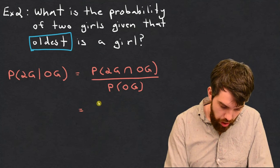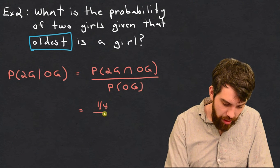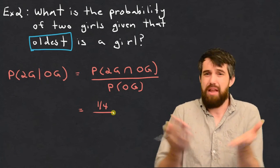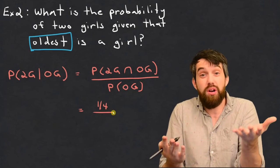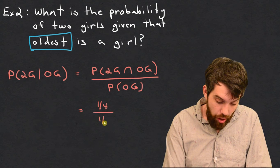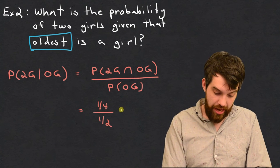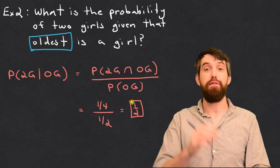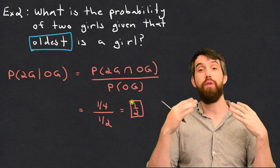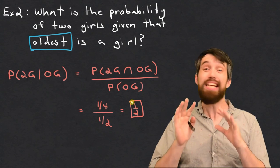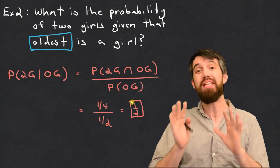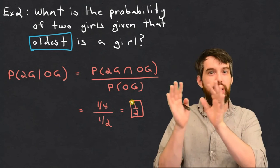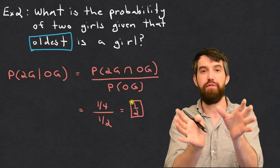So the top is one-quarter. On the bottom, what's the probability that the oldest child is a girl? It's 50-50 — the first child is either a boy or a girl — so there's a one-half chance. This gives one-quarter divided by one-half, which equals one-half. Note this is different from the first problem, which had a value of one-third. This shows that in conditional probability, we have to be really careful about exactly what our event A and event B are when we apply the formula.